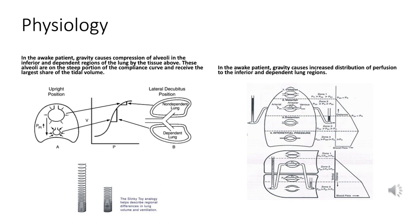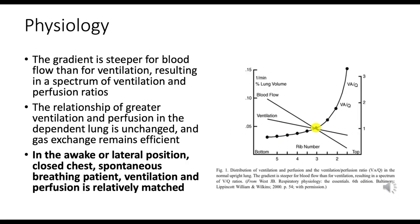Blood flow or perfusion in the lungs is also influenced by gravity. Blood is drawn to the lower regions due to gravitational force when a person is upright, meaning more blood flows to the alveoli in the inferior and dependent parts of the lungs compared to the superior or upper parts — resulting in increased distribution of perfusion to lower lung regions.